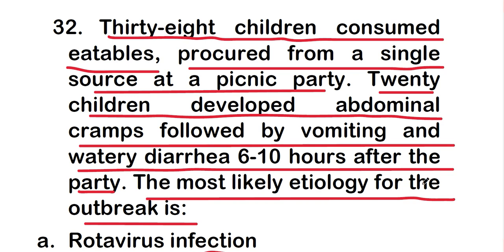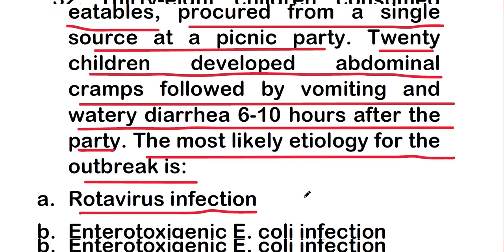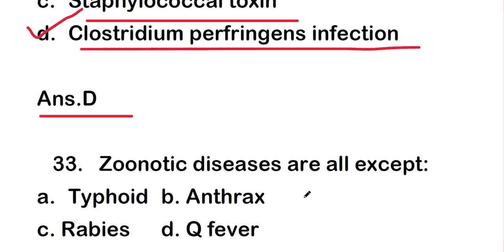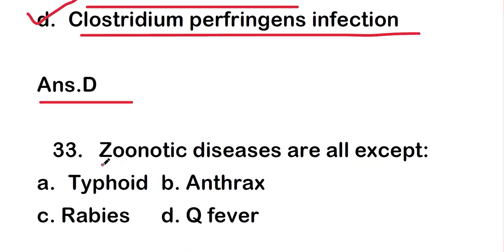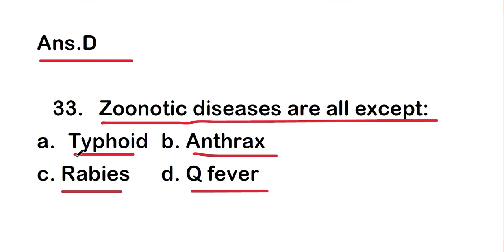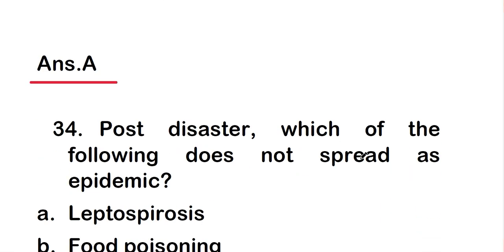Next question: zoonotic diseases are all except — typhoid, anthrax, rabies, or Q fever. The right answer is option A — typhoid is not a zoonotic disease, but anthrax, rabies, and Q fever are examples of zoonotic diseases.